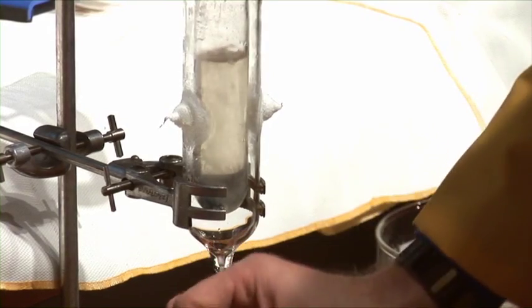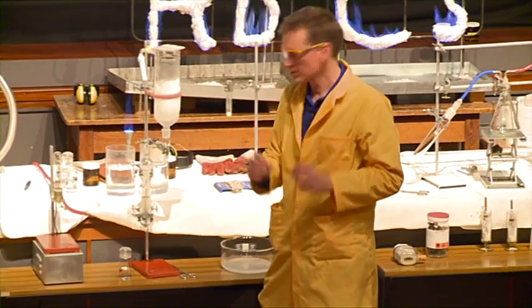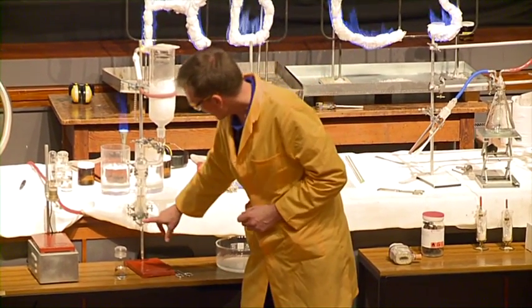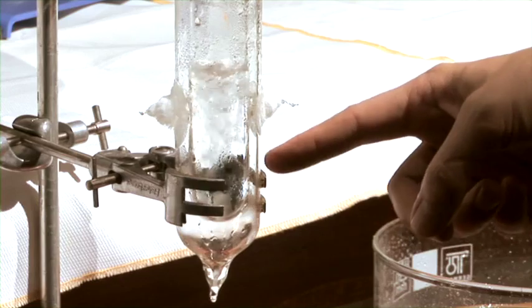So we're forming sodium ions, Na+, and we're losing this outermost electron, and this is giving rise to the blue colour that we're seeing.